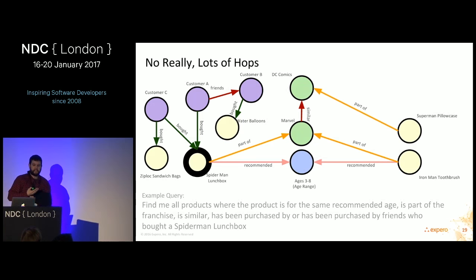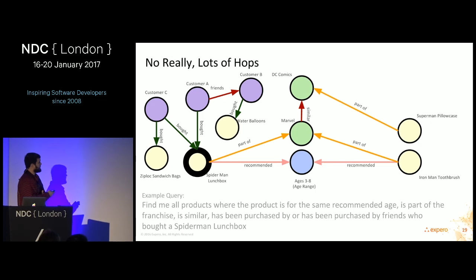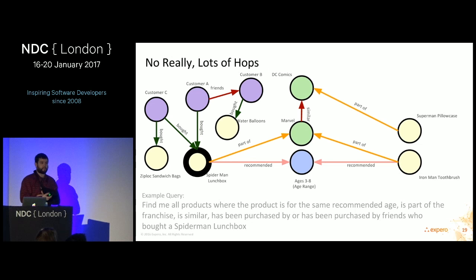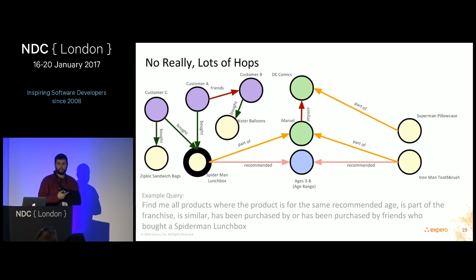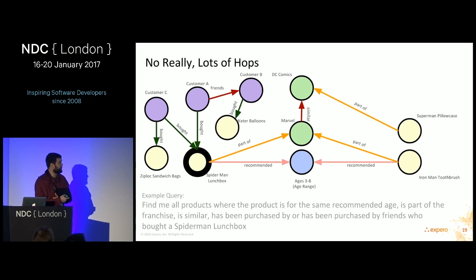Now someone has added sales data to the graph to build a more powerful recommendation engine based on items people bought. You can walk through a very large arbitrary number of hops to get the same sort of information. If you wanted to do this in a relational database, it would probably require a lot of recursive common table expressions, unions, and joins — a query I would not want to write, maintain, or optimize, because it would be quite a headache.